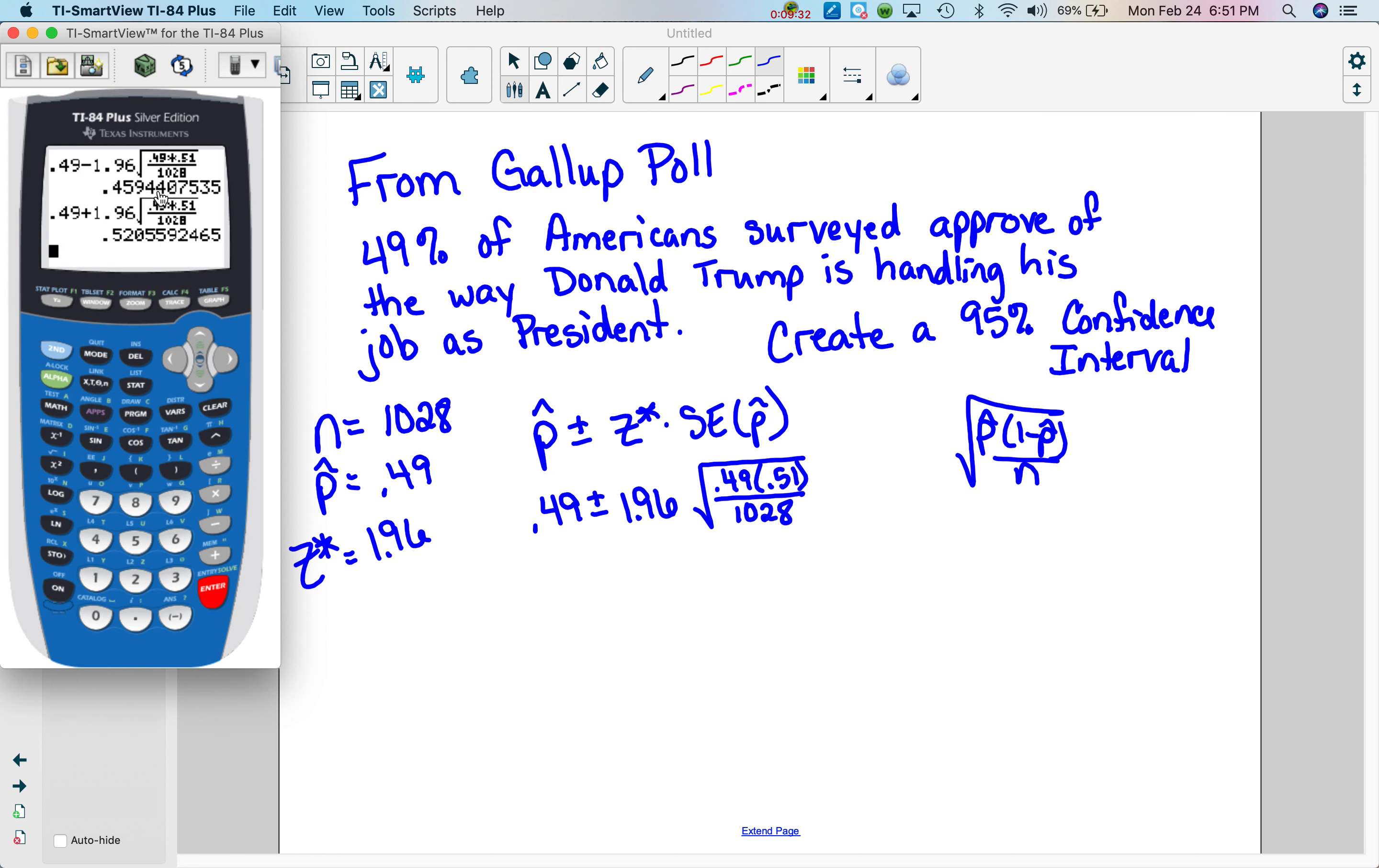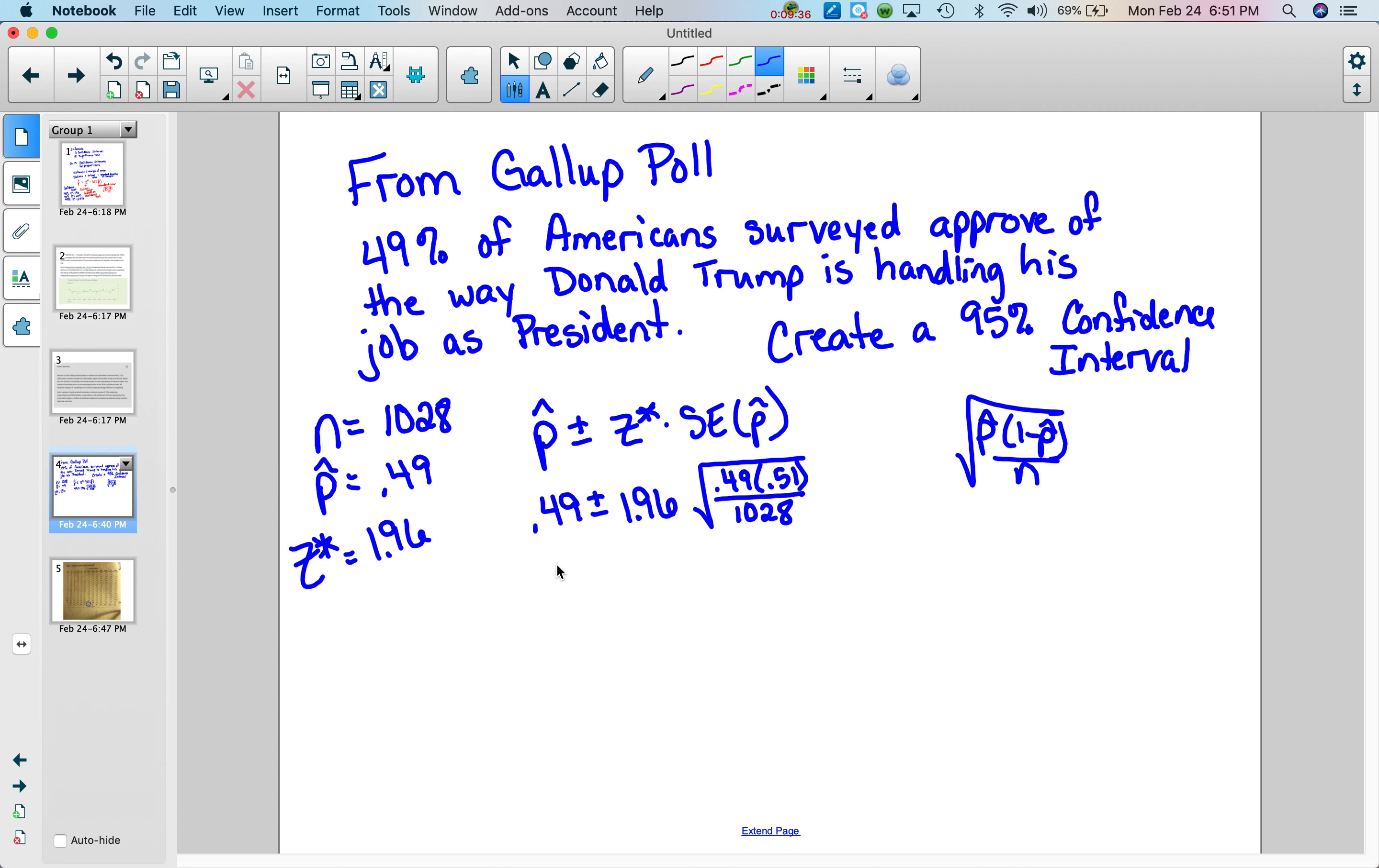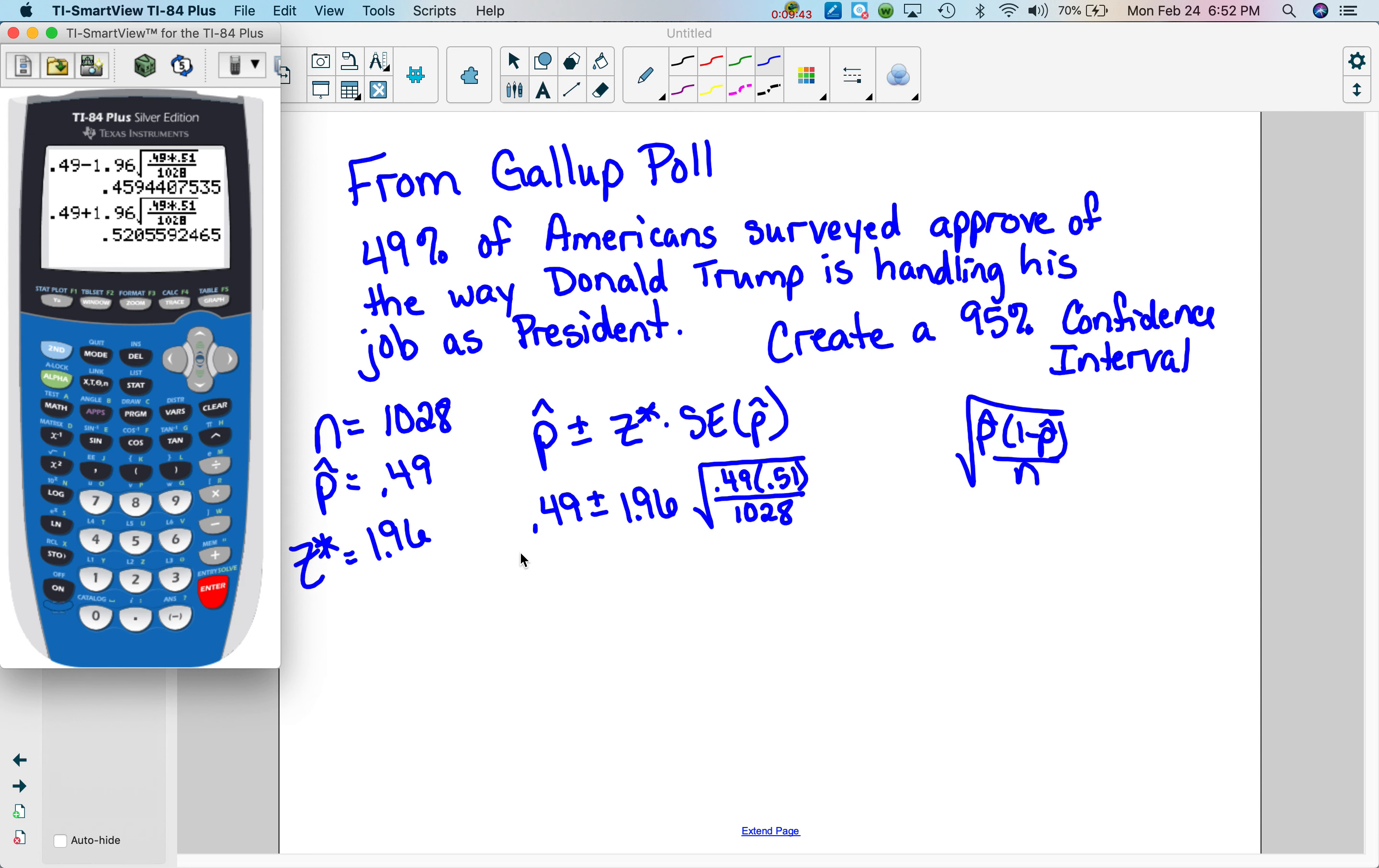So I grabbed my calculator, punched those values in, and you see we get our lower is 0.4594, and then 0.5206 if I round four decimal places. And this is how a confidence interval, how you would write that with parentheses like that.